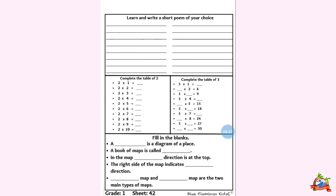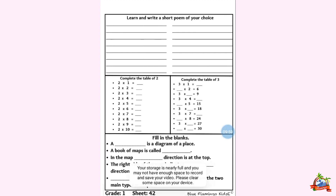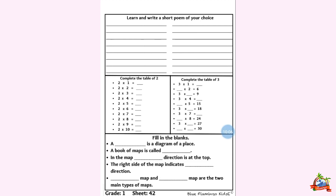So this was all about maths. Now let's move to our last section of this sheet: EBS. Fill in the blanks. A dash is a diagram of a place. Fill in the blank — a map is a diagram of a place. A book of maps is called an atlas. A-T-L-A-S, atlas.